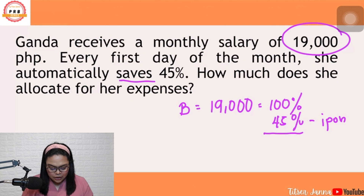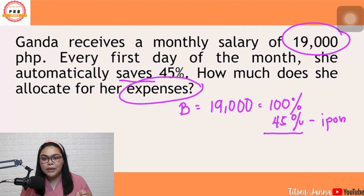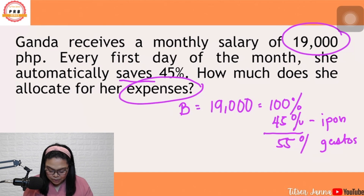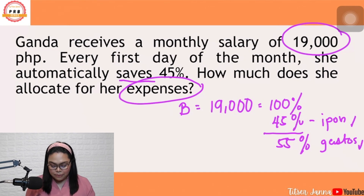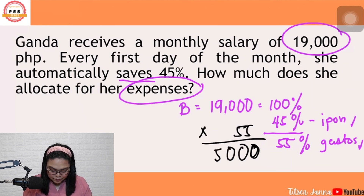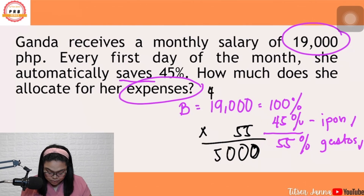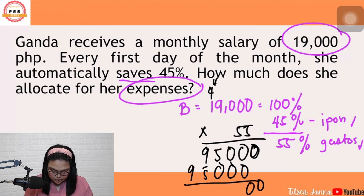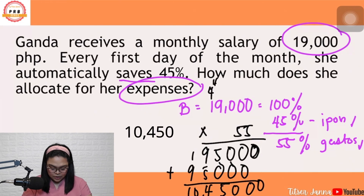How much does she allocate for expenses? Pag sinabing expenses, gastos. So, 100% minus 45% is 55% — yun ang para sa gastos. Anong hinahanap? Yung ipon o yung gastos? Sabi sa problem, gastos. So, 55% times 19,000: the answer is 10,450.